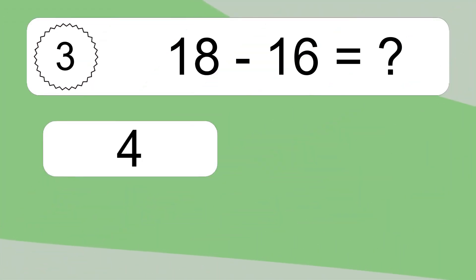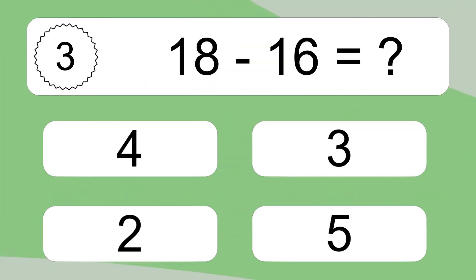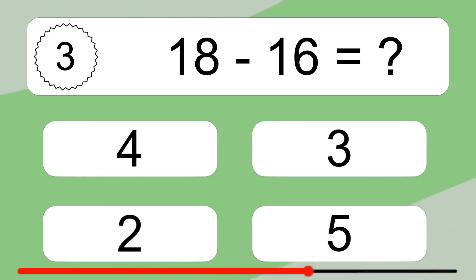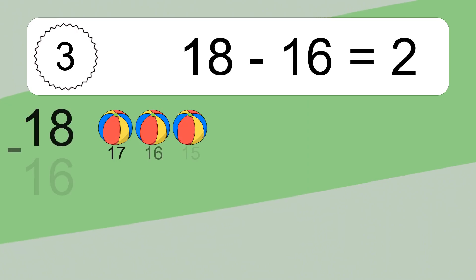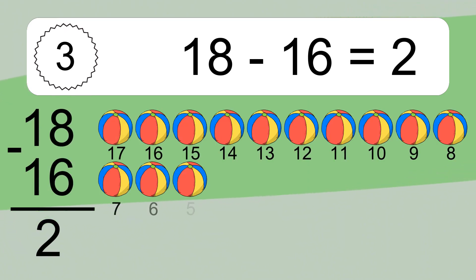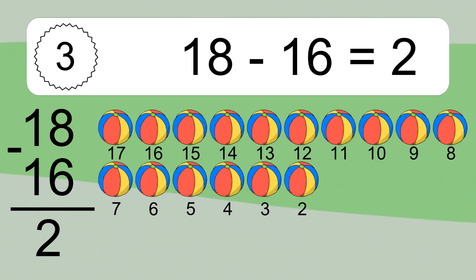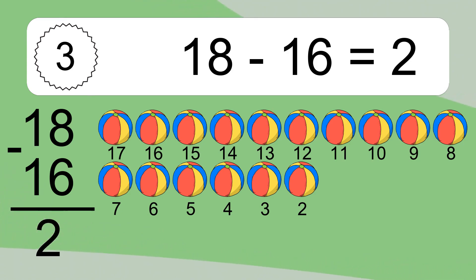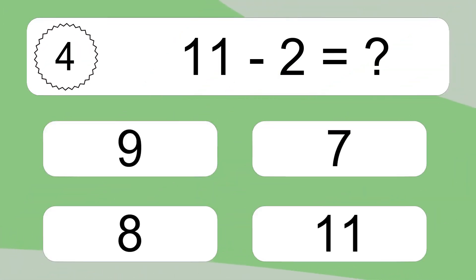18 minus 16 equals what? 18 minus 16 equals 2. Let's count it: 17, 16, 15, 14, 13, 12, 11, 10, 9, 8, 7, 6, 5, 4, 3, 2.